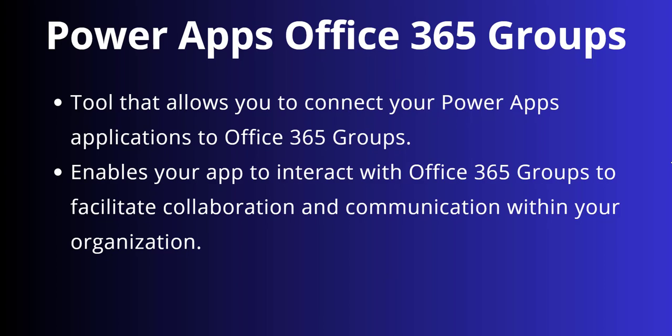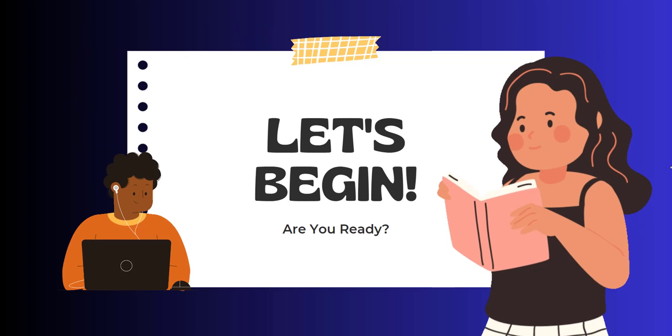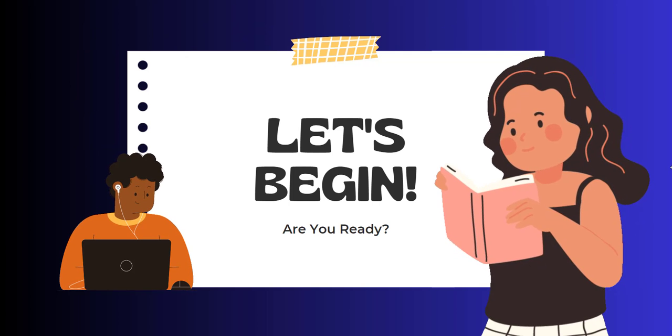It enables your application to interact with Office 365 Groups to facilitate collaboration and communication within your organization. That means if you want a particular Office 365 group's information, you can directly connect this Office 365 Groups connector to your Power Apps application and get all the information from that group.